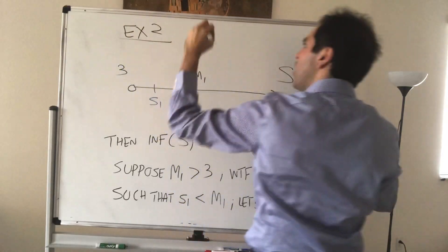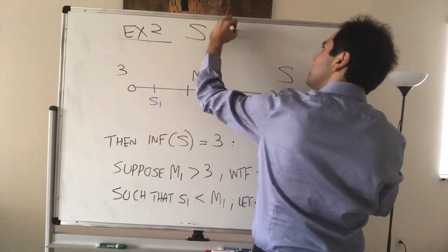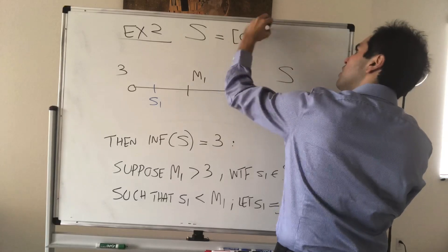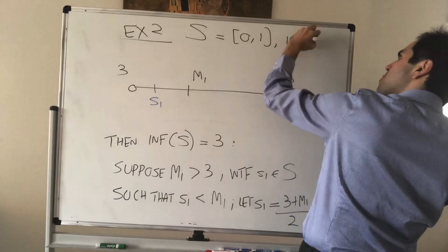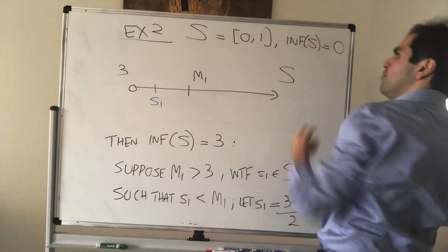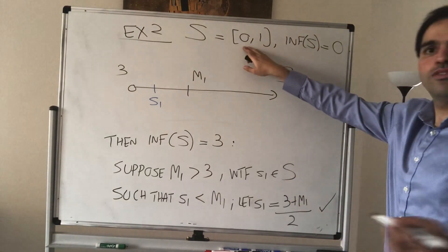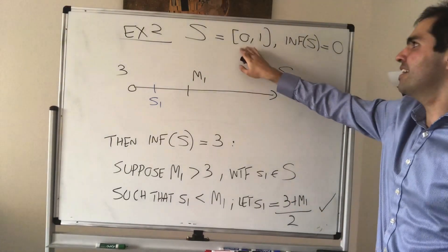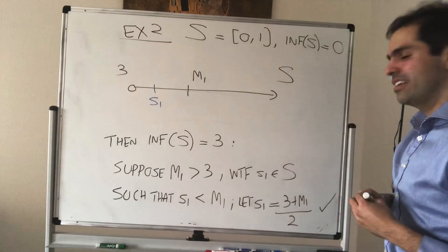Similarly, as a follow-up, if you have a set that does have a minimum, then the inf is the minimum. In other words, in that case, you do the same trick, where you just pick S1 to be 0, and then that works.